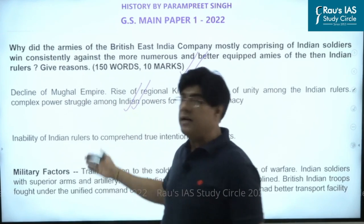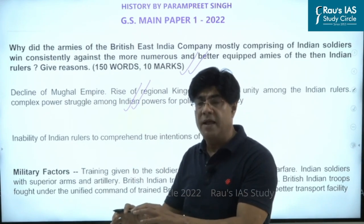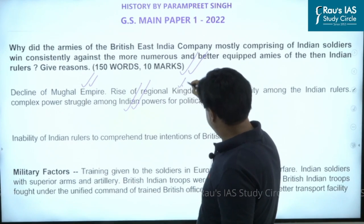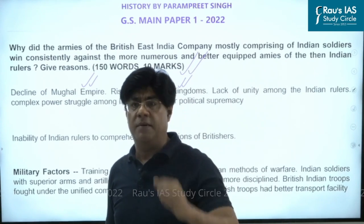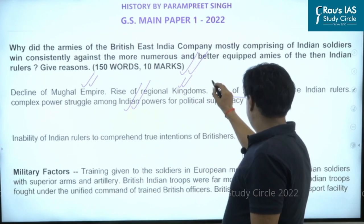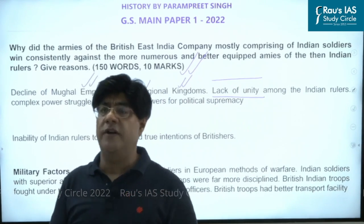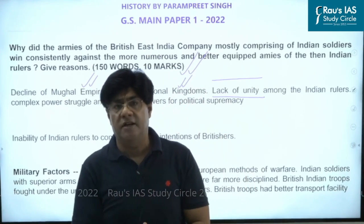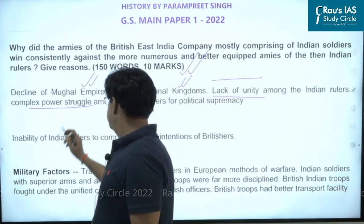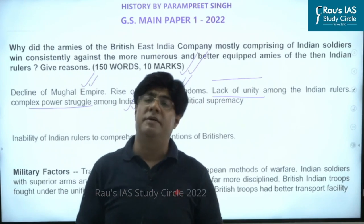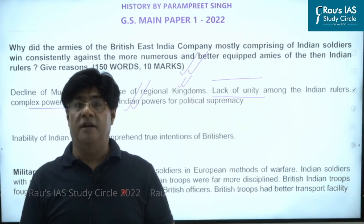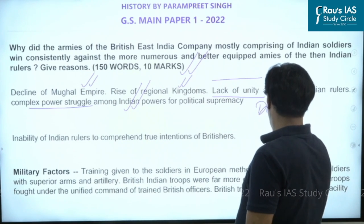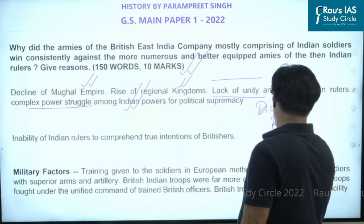We can begin with the political weakness of that time. The main cause was not only military weakness but also conditions of the time. In the 18th century, the Mughal Empire had declined, and there was a rise of regional kingdoms like Bengal and others. Among these kingdoms, one major problem was the lack of unity — kings kept fighting each other. This complex power struggle among Indian powers gave the British an advantage, allowing them to easily play their politics of divide and rule.